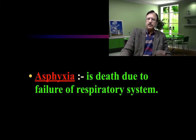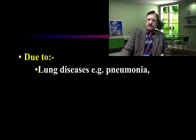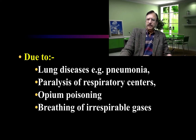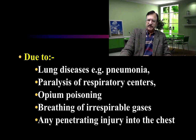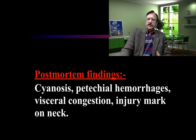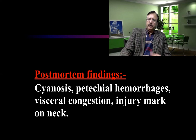Asphyxia is due to failure of the respiratory system. This can result from diseases of the lung, paralysis of the respiratory center, opium poisoning, breathing of irrespirable gases, penetrating injury into the chest, or traumatic asphyxia — any process which interferes with respiration leads to asphyxia. At autopsy, cyanosis, petechial hemorrhages, visceral congestion, and injury at the local point of trauma — either the chest or the neck — will be seen.